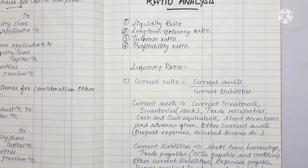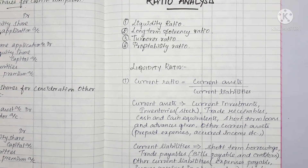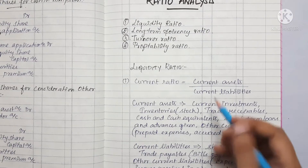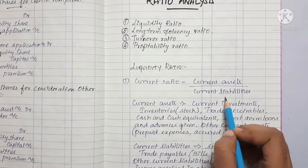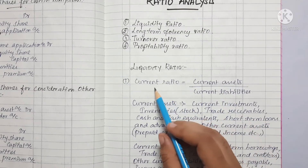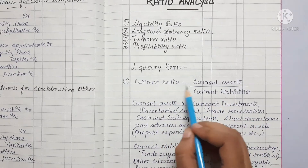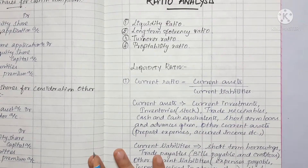In Liquidity Ratio, there are 2 ratios: Current Ratio and Quick Ratio. Current Ratio is equal to Current Assets divided by Current Liabilities.